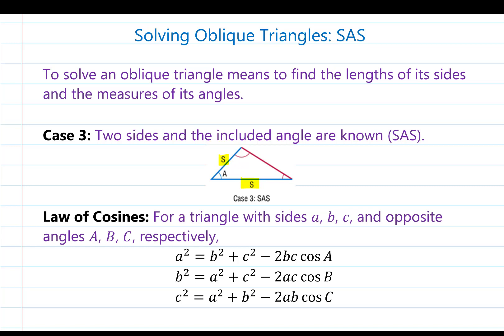For this case, we will use the law of cosines to solve the triangle, which states: for a triangle with sides a, b, and c, and opposite angles A, B, and C respectively, we have three versions of the formula. The first says: a squared is equal to b squared plus c squared minus 2bc times cosine of angle A.